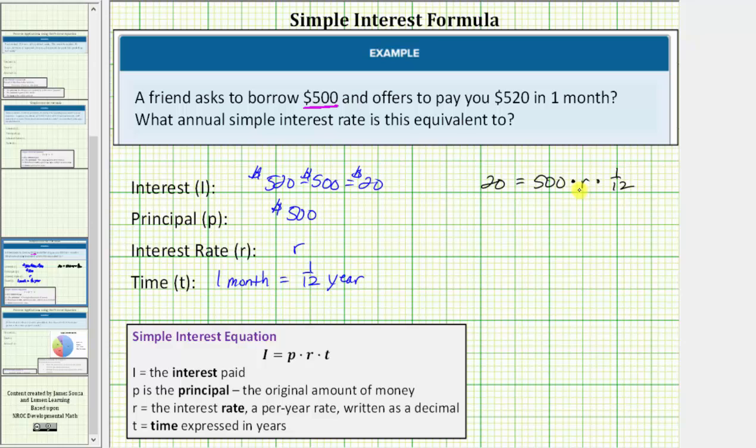Well, 500 times R times one twelfth would be five hundred twelfths R, so let's write 20 equals five hundred twelfths R. Five hundred twelfths simplifies, so let's work on simplifying the fraction.